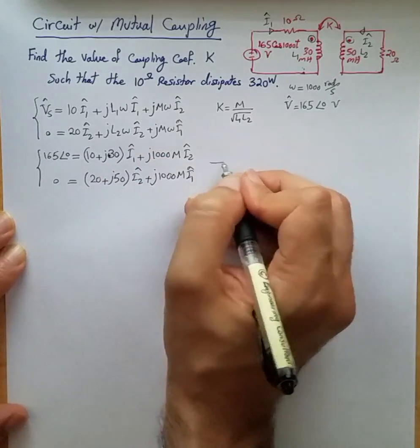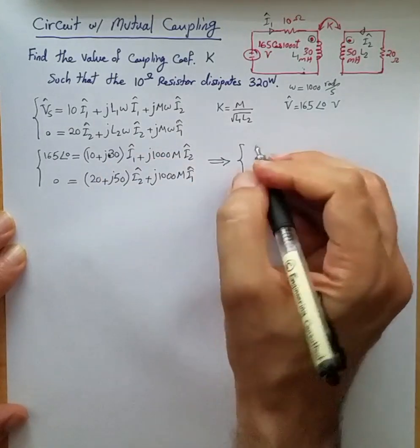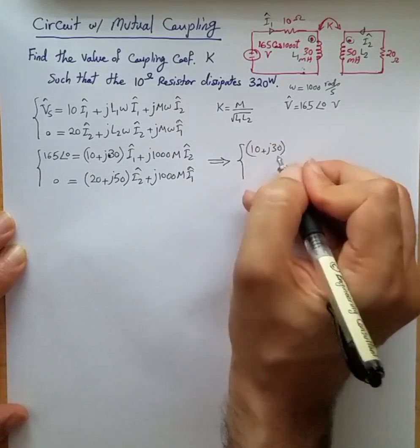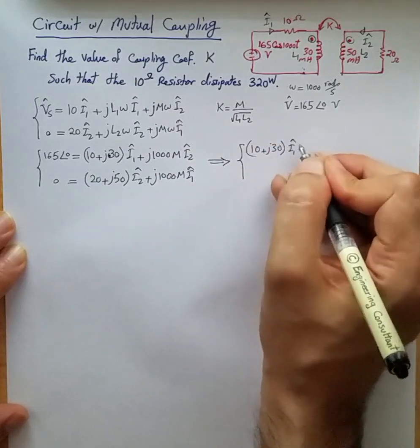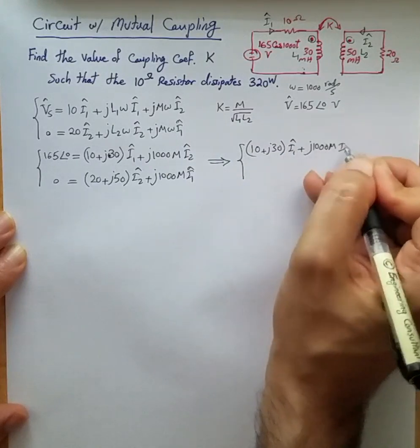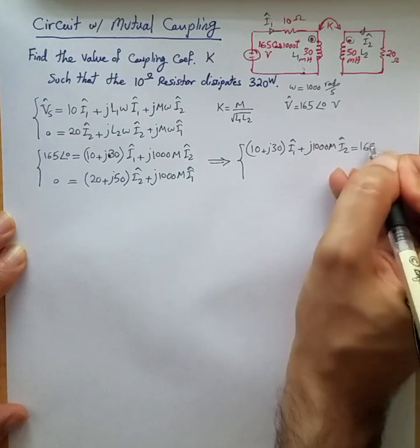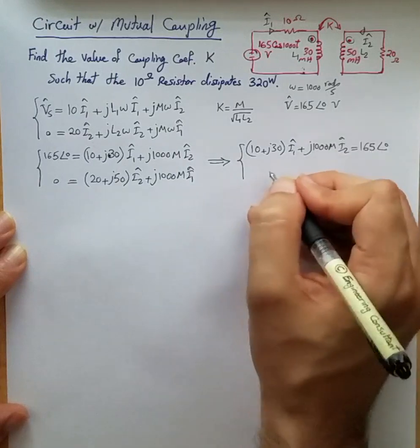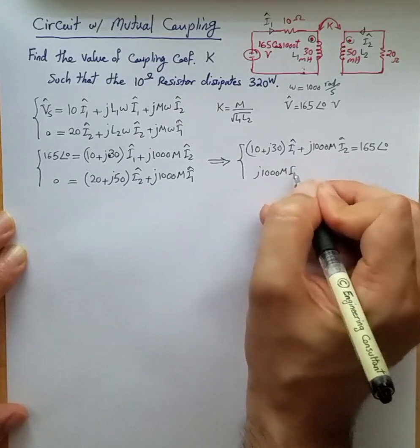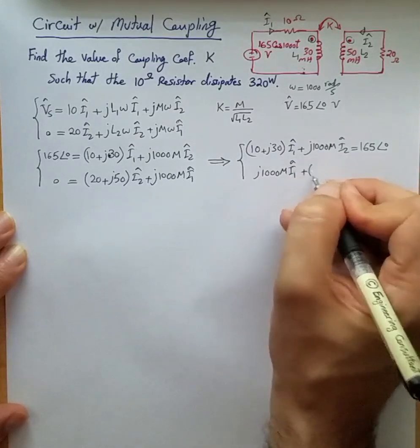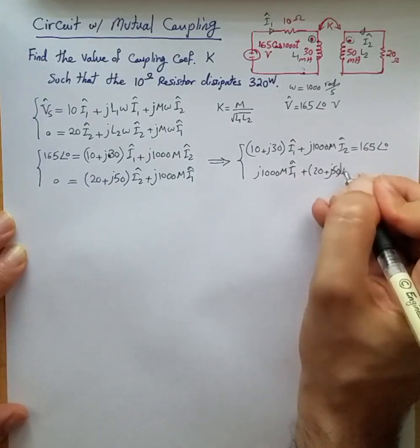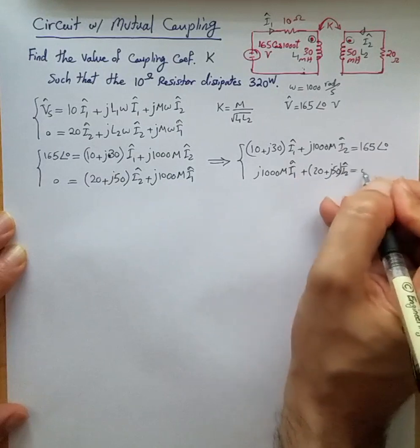Let's clean up. In a better way, (10 + j30)I1 + j1000M I2 = 165 phase 0, and j1000M I1 + (20 + j50)I2 = 0.